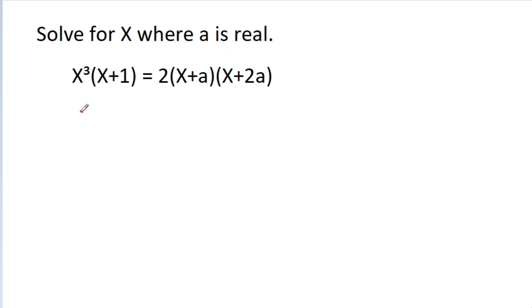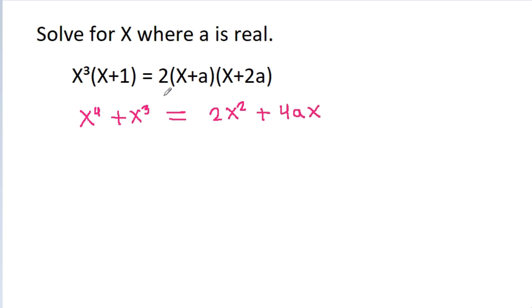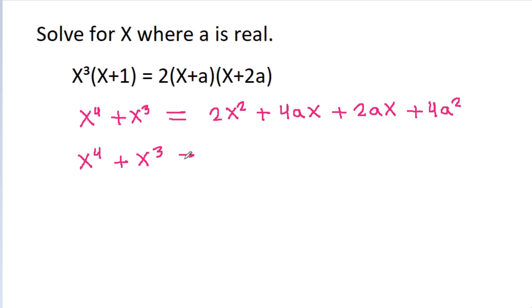So x³ times x will be x⁴ and x³ times 1 will be x³. That is equal to 2 times x times x, which will be 2x², and 2 times x times 2a will be 4ax, and 2 times a times x will be 2ax, and 2 times a times 2a will be 4a². So it is x⁴ + x³ = 2x² + 6ax + 4a².